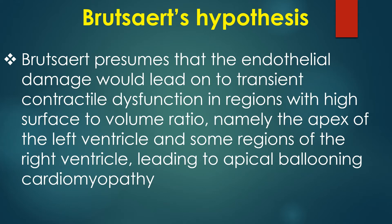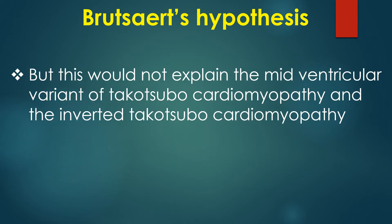Bruzard presumes that endothelial damage would lead to transient contractile dysfunction in regions with high surface to volume ratio, namely the apex of the left ventricle and some regions of the right ventricle, leading to apical ballooning cardiomyopathy. However, this would not explain the mid-ventricular variant of Takotsubo Cardiomyopathy and the inverted Takotsubo Cardiomyopathy.